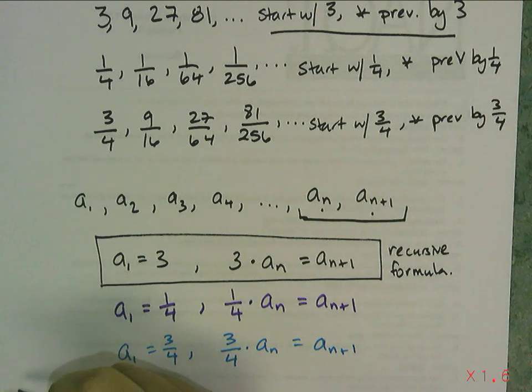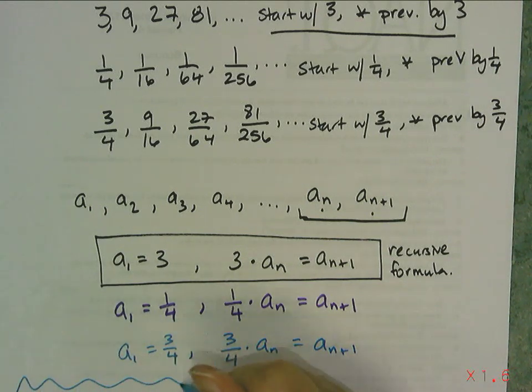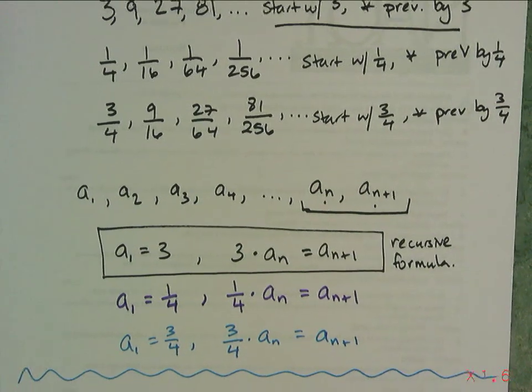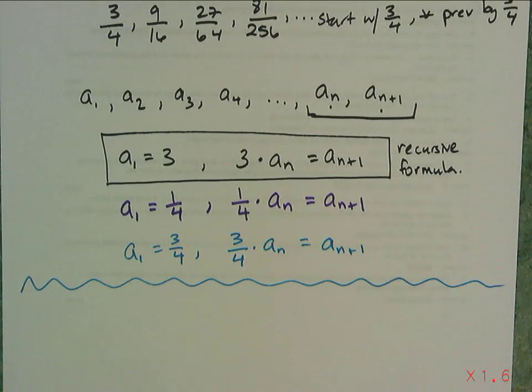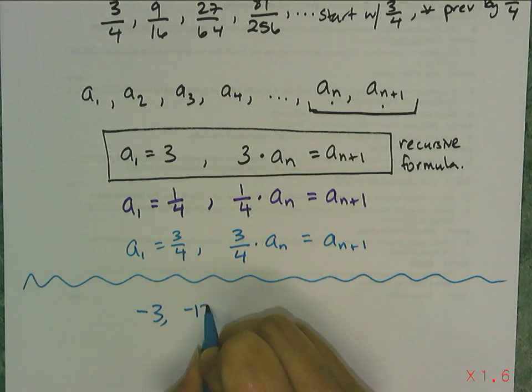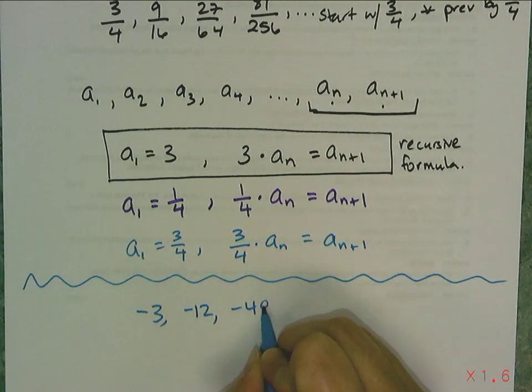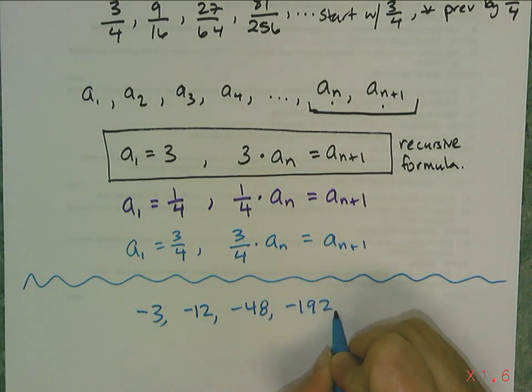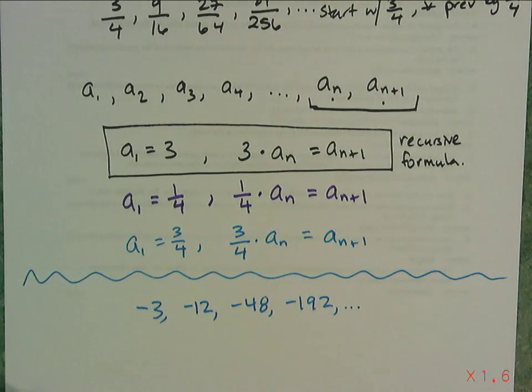Now let's look at a different sequence that doesn't use the same number over and over again, so we can actually see the difference. If I have the sequence -3, -12, -48, and -192, I look at this sequence first and I have to figure out how the numbers are being generated.